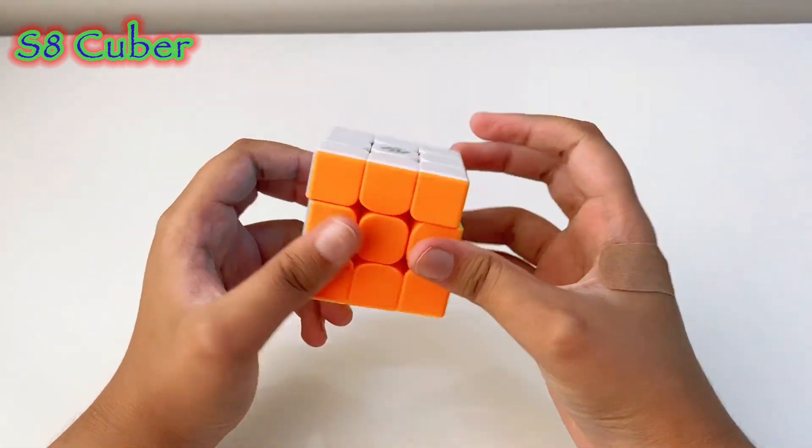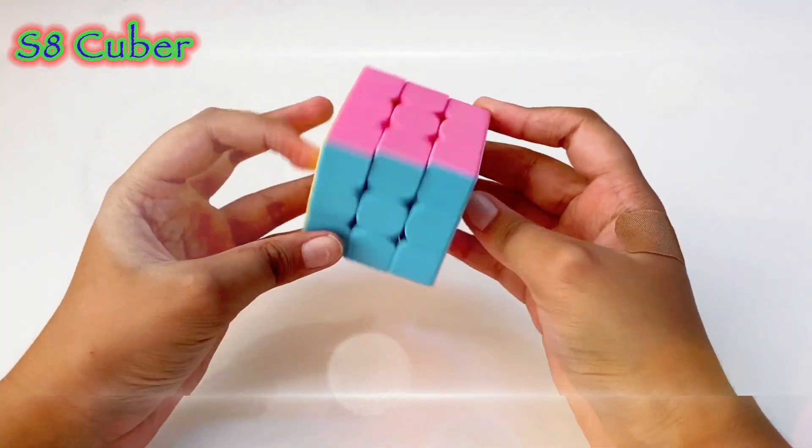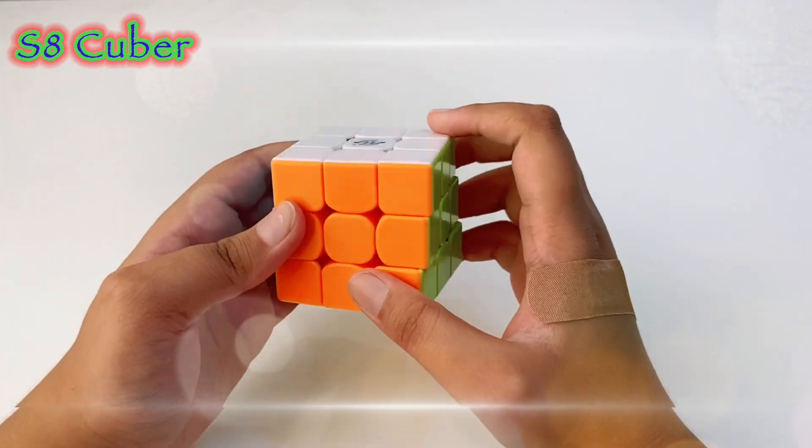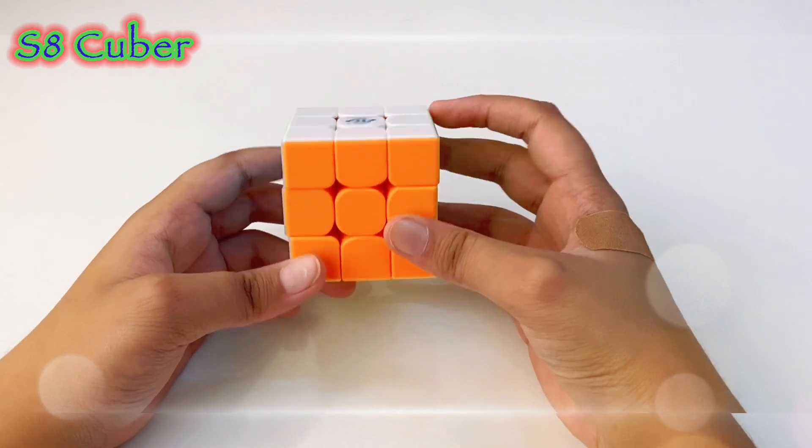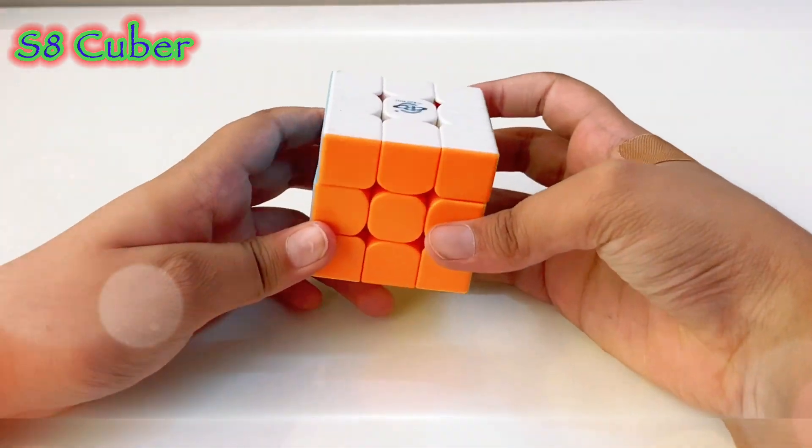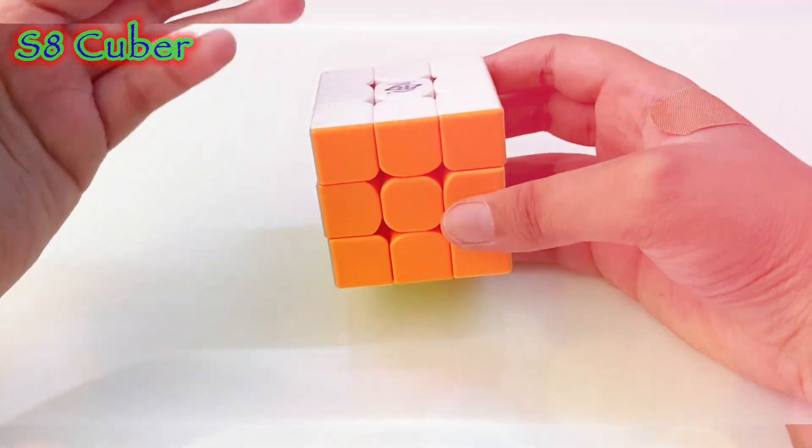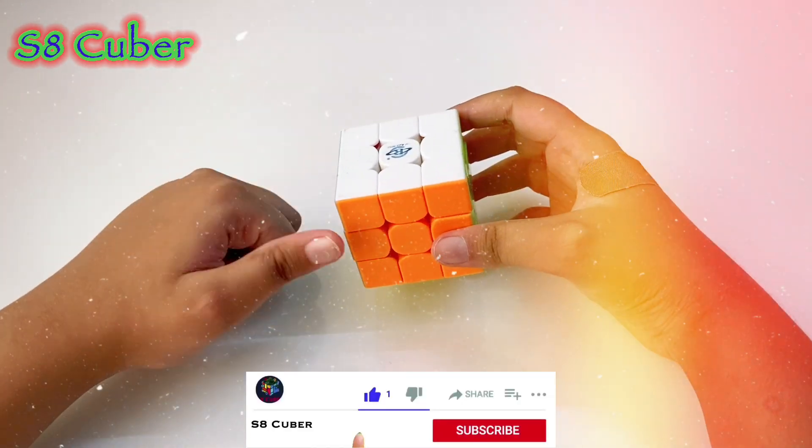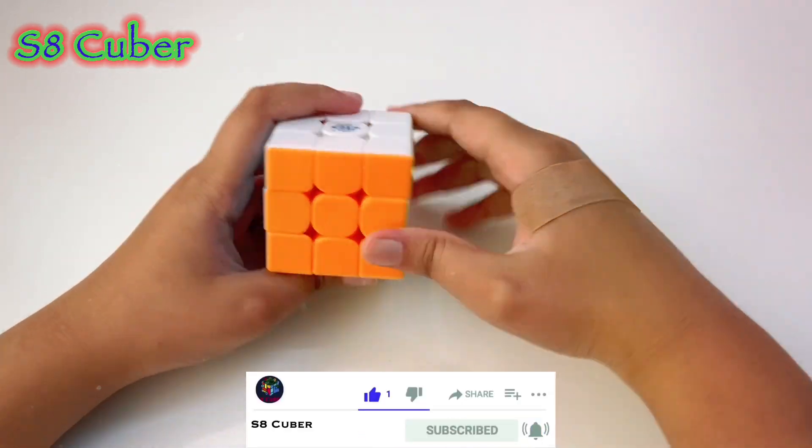As you guys can see, nothing else is left and these two corners which we had not oriented properly are done. If you want to see other parity videos in the higher cubes, then tell me in the comment section and also like. For now, bye bye.